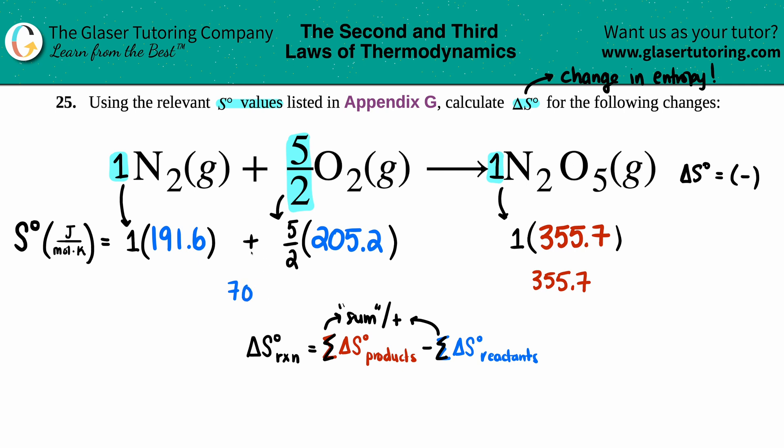Now I'm ready to plug it into my formula. Delta S for the reaction is the products, 355.7, minus the reactants, which was 704.6. If we look at this, it's a negative value—we predicted correctly!